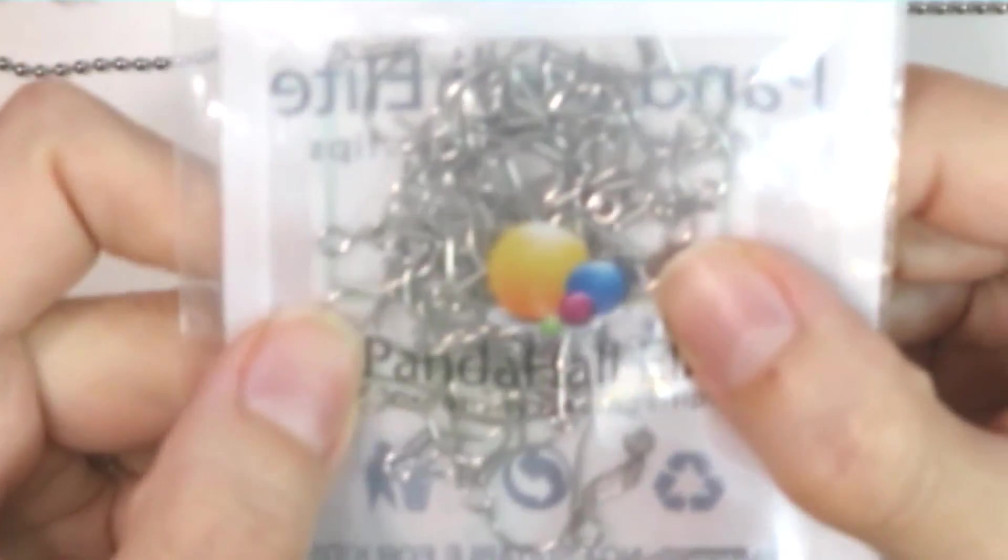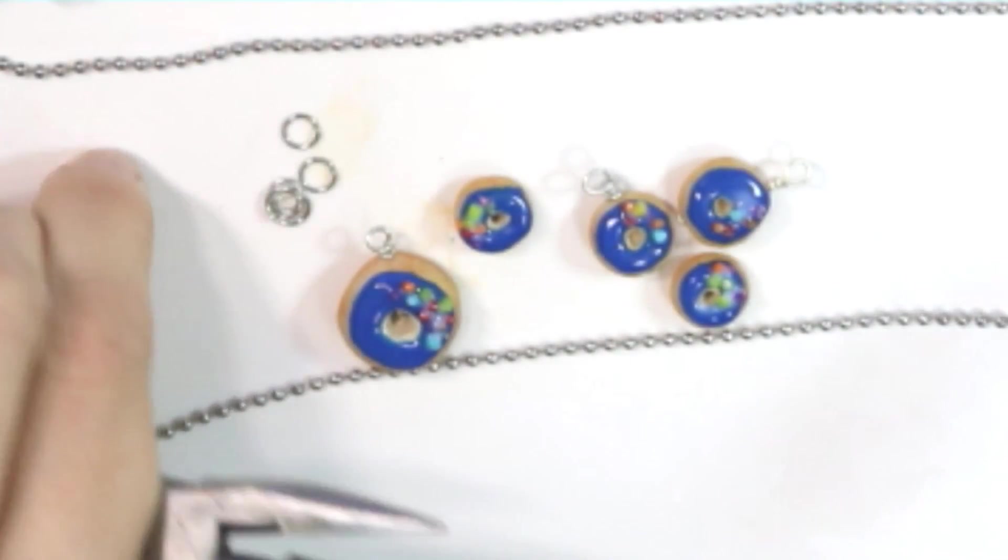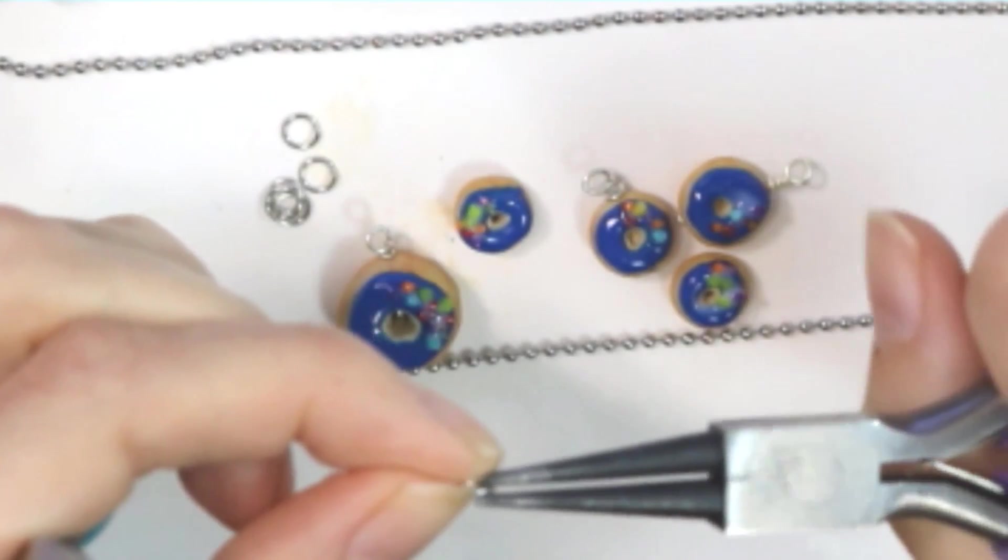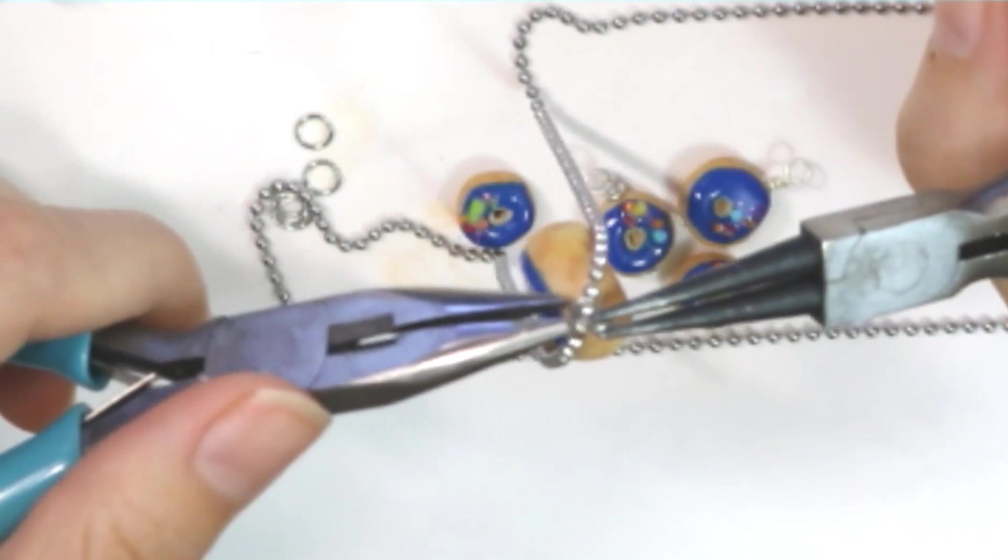I'm going to take a loop and add that into the biggest donut, which is the necklace. We're just going to close that up and this guy is done. How simple is that?